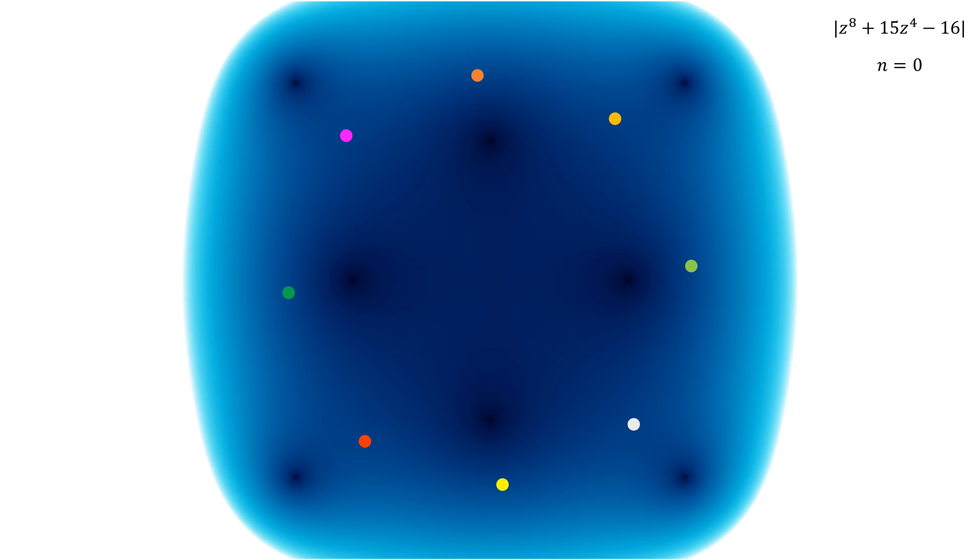Let's apply the complicated formula, I mean, of Aberth-Ehrlich, our modified Newton method, to the function z to the eighth plus 15 z to the fourth minus 16.